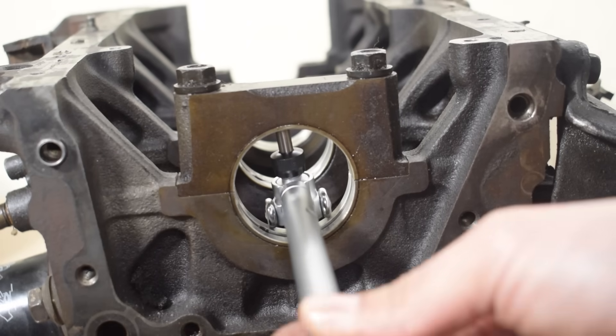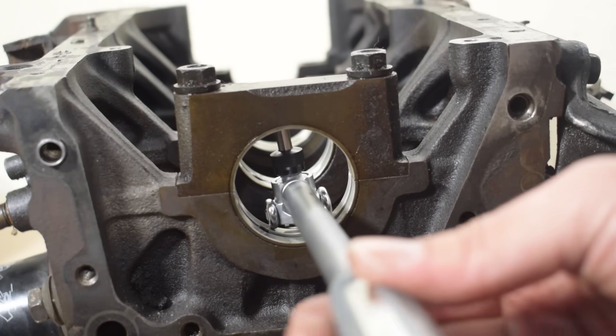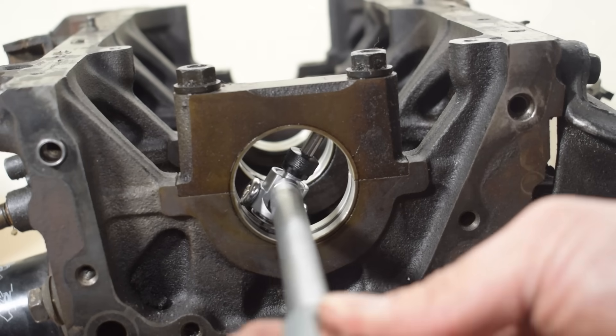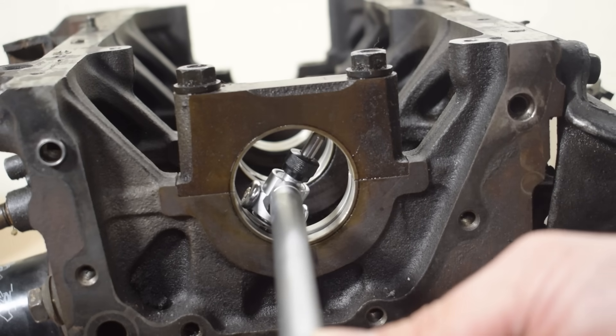Once we are done with these measurements, we'll repeat the same three measurements on the back of the bearing. Usually when a bearing is in good shape and shows no abnormal wear, measurements will be equal at the back and at the front of the bearing.